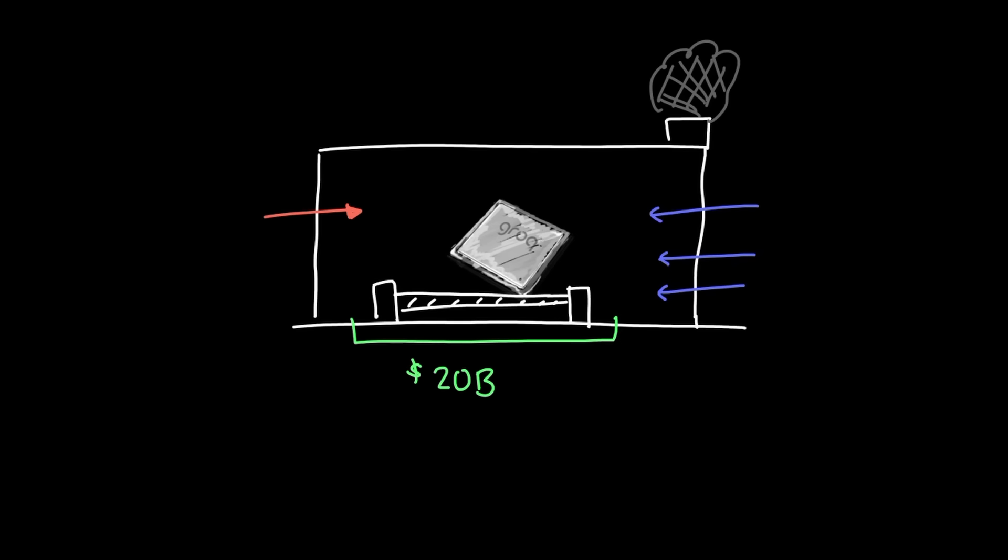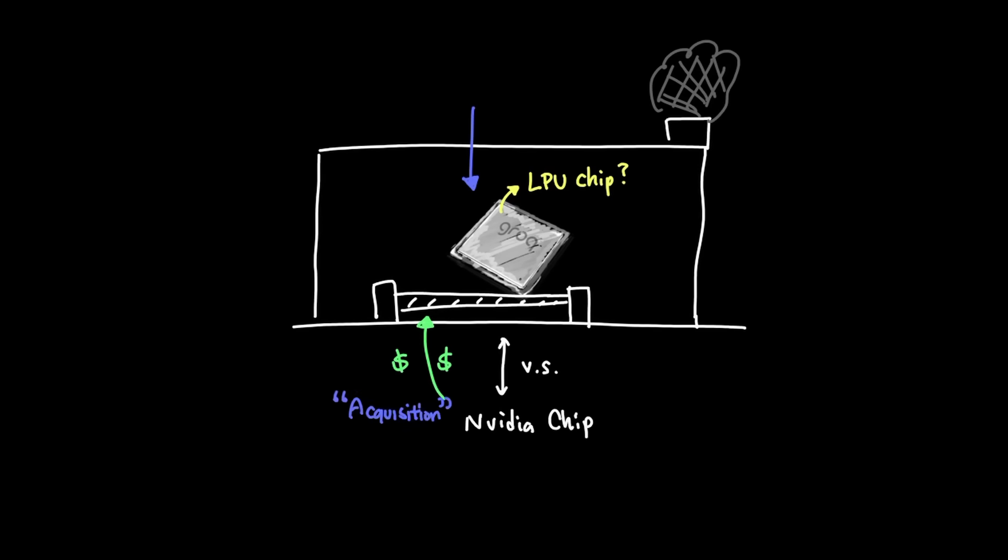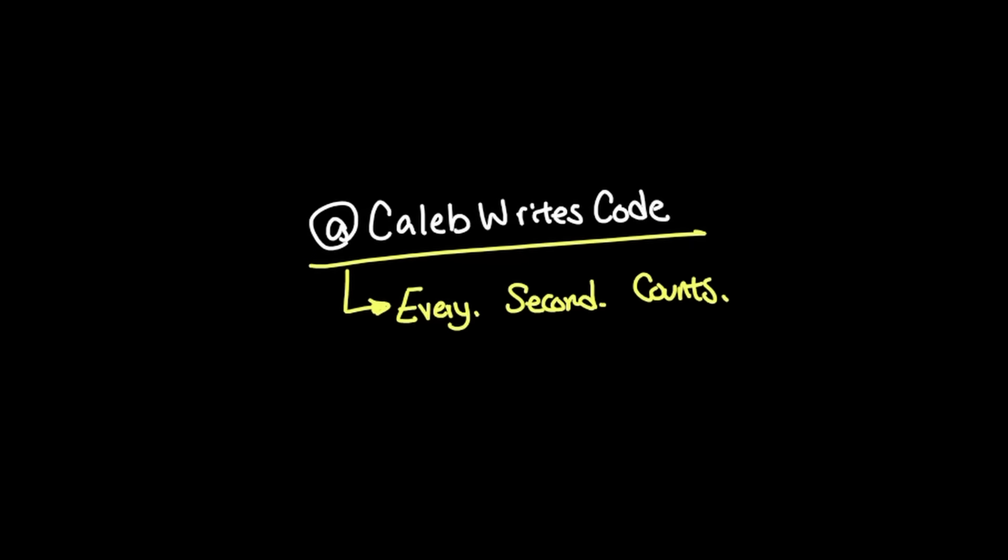Especially given the fact that Grok's revenue is less than $500 million after operating for 9 years. So today, we're going to dig deep into Grok's AI chip and find out what makes what they call LPU chips different from NVIDIA's GPU. And also, find out why NVIDIA is spending this much into their acquisition of Grok. Welcome to Kale Bright's Code, where every second counts.